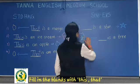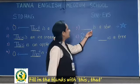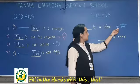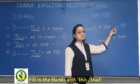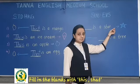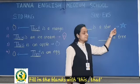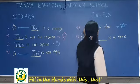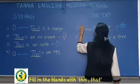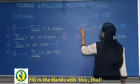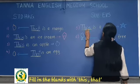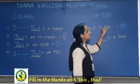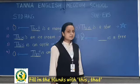Now see the fifth one — that is a star. It is near to us. So what do we say? 'This.' T-H-I-S. This is a star.